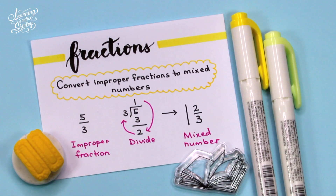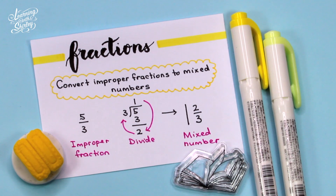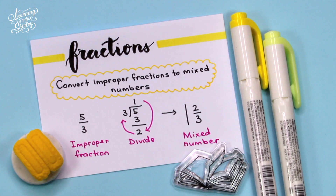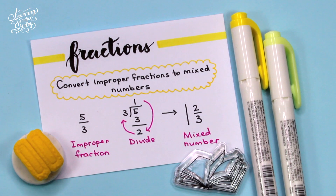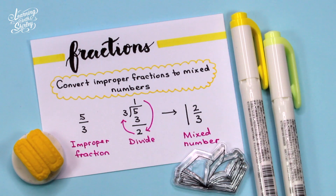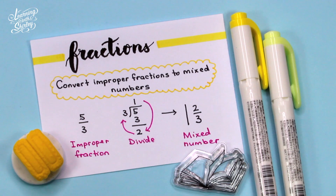How to convert improper fractions to mixed numbers? When we encounter an answer which is an improper fraction, we have to change it to a mixed number. In order to change an improper fraction to a mixed number, we divide. For example, 5 over 3: 5 divided by 3 gives 1 remainder 2, so the answer is 1 and 2 over 3, which is a mixed number.